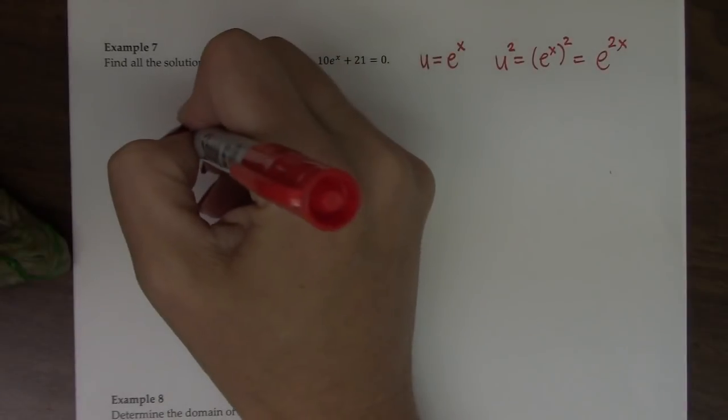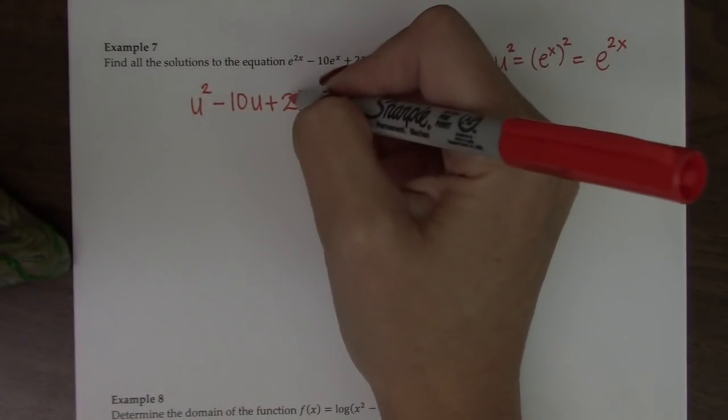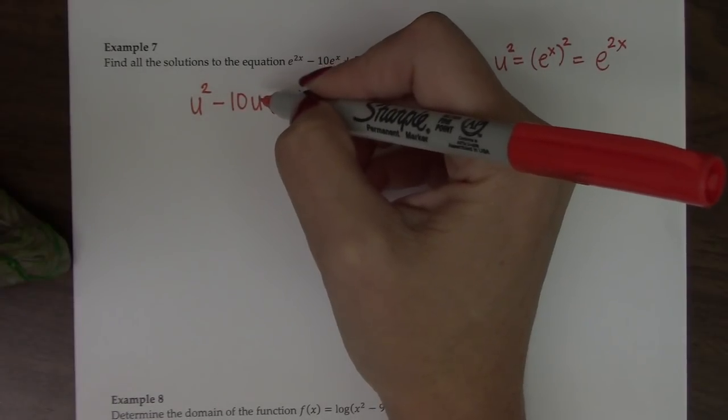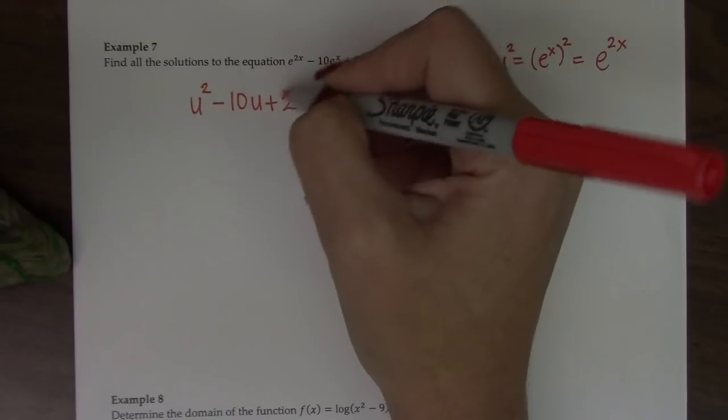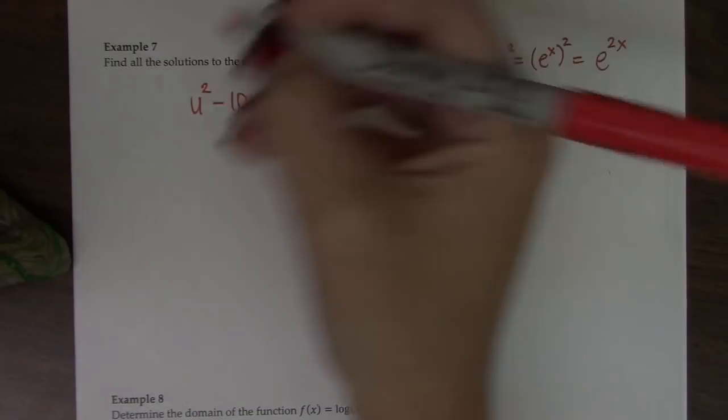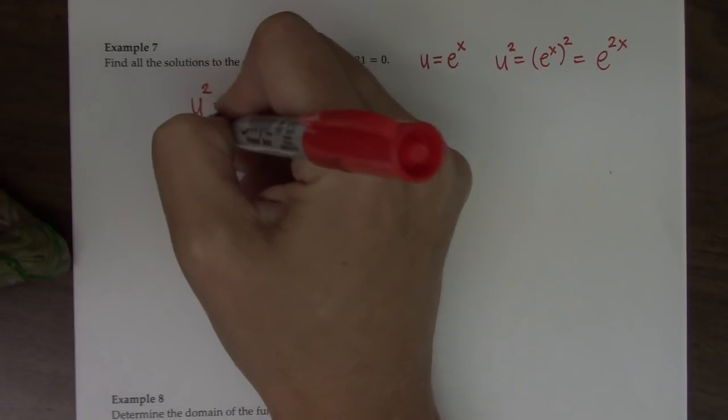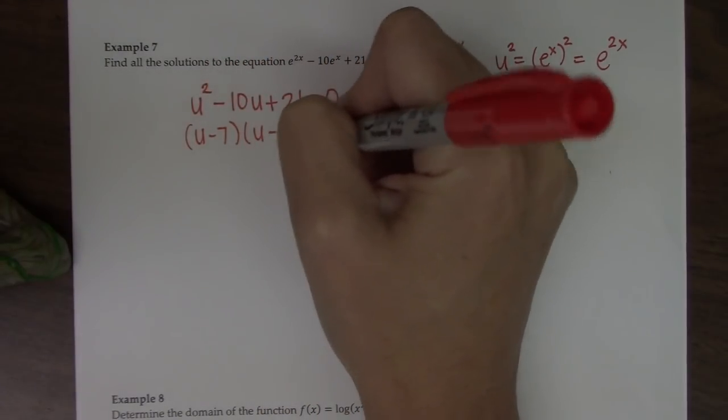So I can see here that I need to know what two numbers multiply to 21 that will either add or subtract to give me 10. And so 3 times 7 is 21 and 3 plus 7 is 10. So u minus 7 times u minus 3 equals 0.